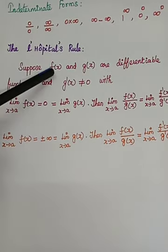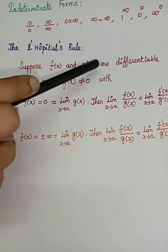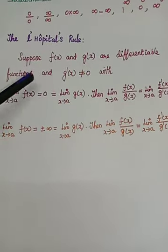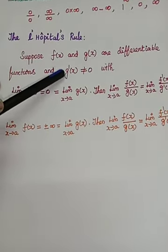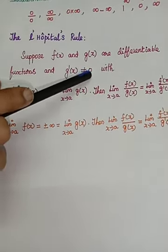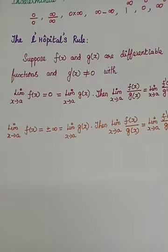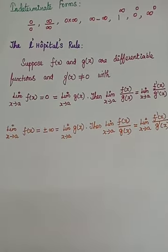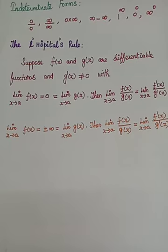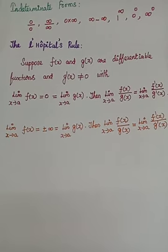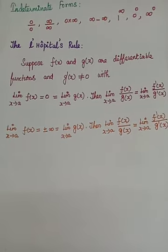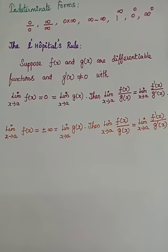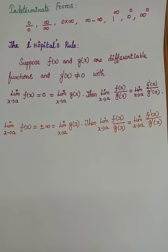Suppose f(x) and g(x) are differentiable functions and g'(x) ≠ 0. We are taking two functions: f(x) and g(x). Both should be differentiable — that means we can differentiate f(x) and g(x).